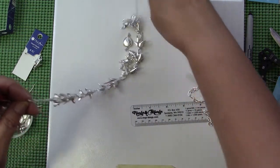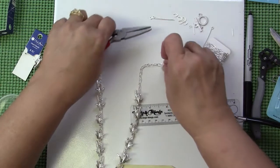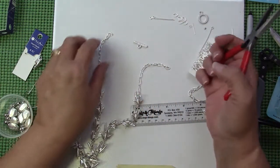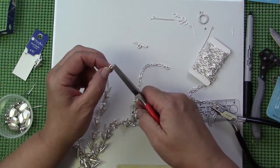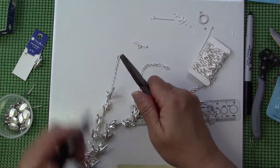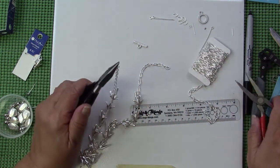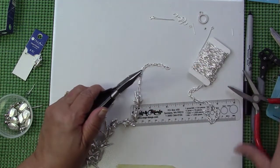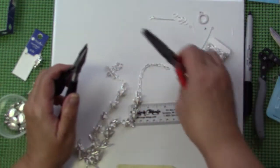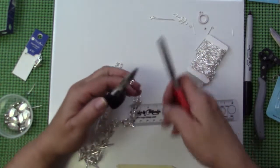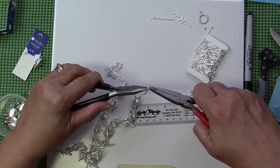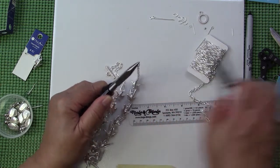Then I can add the pieces of the toggle clasp to the other side.